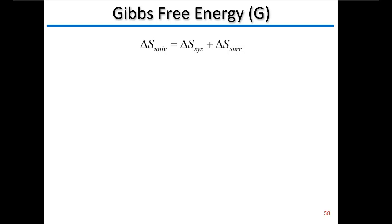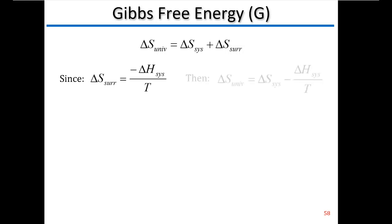Let's start from our entropy equation. We know that entropy of the universe is equal to delta S of the system plus delta S of the surroundings — same definition we've been using. The first thing we're going to do is substitute what we know about delta S of the surroundings: minus delta H of the system over T. So we get: delta S of the universe equals delta S of the system minus delta H of the system over T.